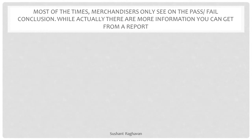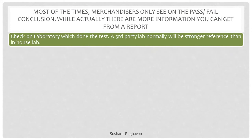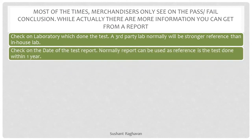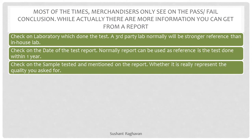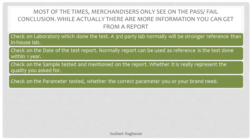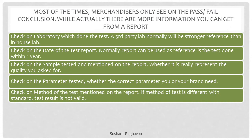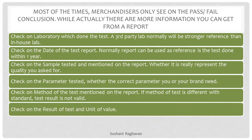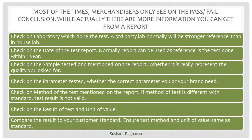Most of the time, merchandisers only look at the pass/fail conclusion, while actually there is more information you can get from a report. Check which laboratory conducted the test — a third-party lab will normally be a stronger reference than an in-house lab. Check the date of the test report; normally a report can be used as reference if the test was done within one year. Check the sample tested and mentioned on the report to verify it really represents the quality you asked for. Check the parameters tested to ensure they are the correct parameters you or your brand needed. Check the method of the test — if the method differs from the standard, the test result is not valid. Check the result of the test and the unit of value, and compare the result to your customer standard, ensuring the test method and unit of value are the same as the standard.